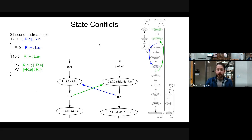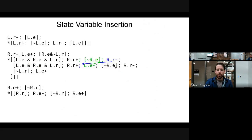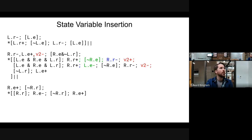To disambiguate these two states, we need to divide up the state space using a transition and cut those arcs. We're going to put in a transition on a state variable called V2, which is reset low to begin with. It's going to go high right after the first R.R down, and go low right after R.R down the second time. That should disambiguate those two states.